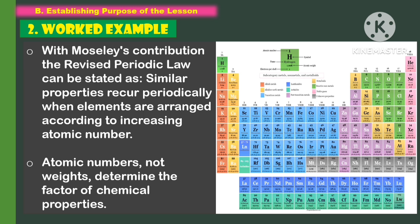Similar properties recur periodically when elements are arranged according to increasing atomic number. Atomic numbers, not weights, determine the factors of chemical properties.